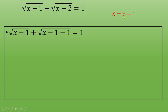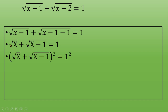If you plug this substitution into the equation, you end up with the square root of capital X plus the square root of capital X minus 1, equal to 1. Now you want to eliminate the square roots, so you are going to square both sides of this equation.